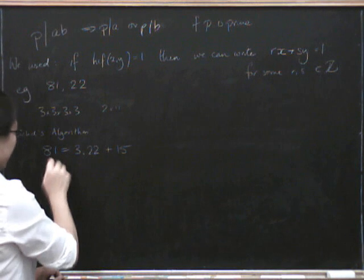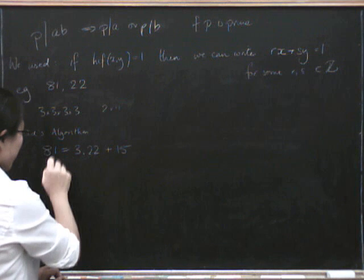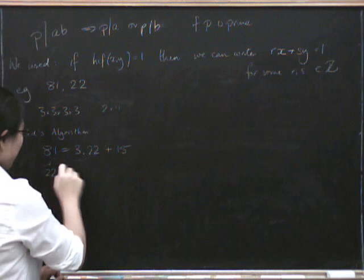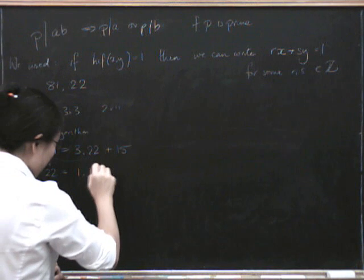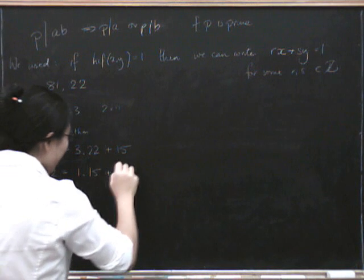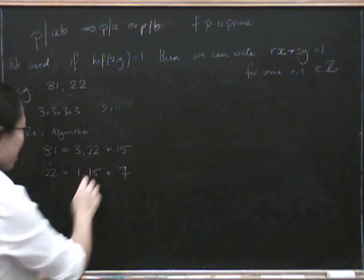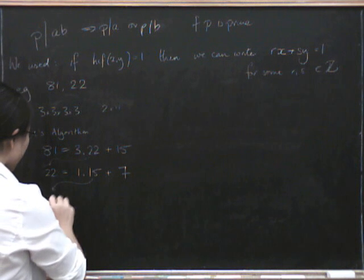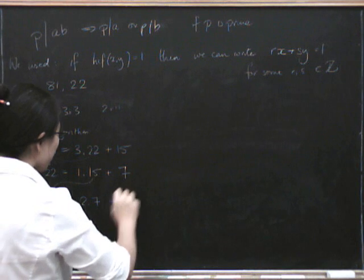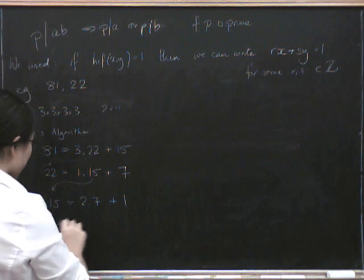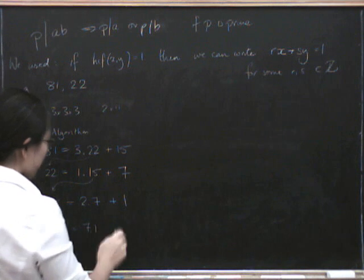So now we do 22. We take this 22 over here, remember? And we do division with remainder on 15. Well, that's only one 15 that we can fit into 22. And we'll have 7 left over. And now we take the 15 over here, and we say 15 is 2 sevens with 1 left over. And now we're clear because 7 is 7 times 1, and we're done.